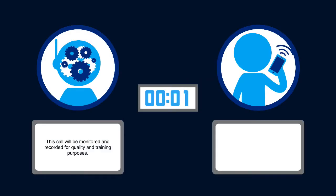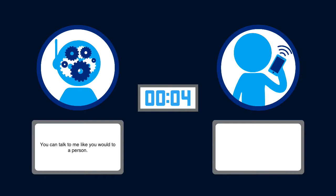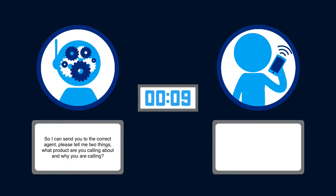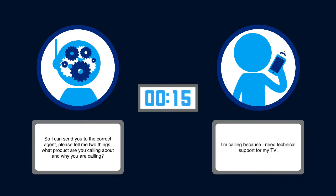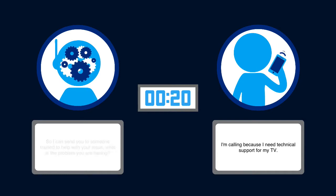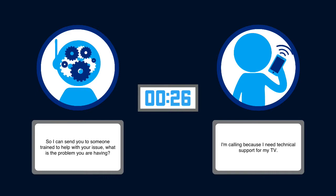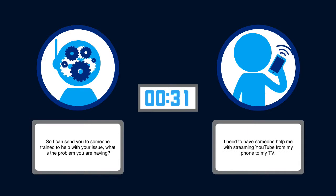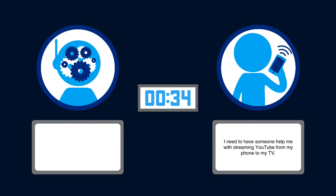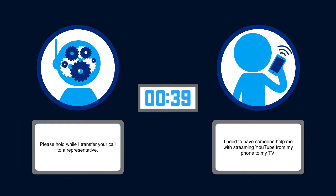This call will be monitored and recorded for quality and training purposes. You can talk to me like you would to a person. So I can send you to the correct agent, please tell me two things: what product are you calling about and why you are calling? The caller responds: I'm calling because I need technical support for my TV. The system then asks: so I can send you to someone trained to help with your issue, what is the problem you are having? The caller says: I need to have someone help me with streaming YouTube from my phone to my TV. The system replies: I can get someone to help you with your TV. Please hold while I transfer your call to a representative.